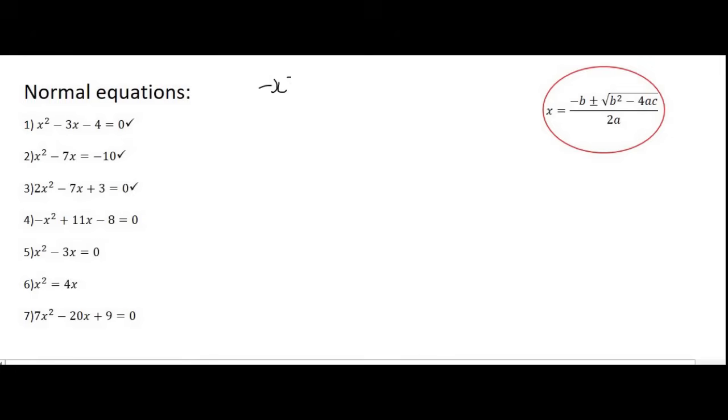Number 4. Negative x squared plus 11x minus 8. That would just be a formula one. So I'm not going to show you all the processes, but make sure when you're plugging that into the formula that you are plugging it in correctly while using brackets. And for that one, your answers are going to be 0.78 and 10.22, rounded off to two decimal places.